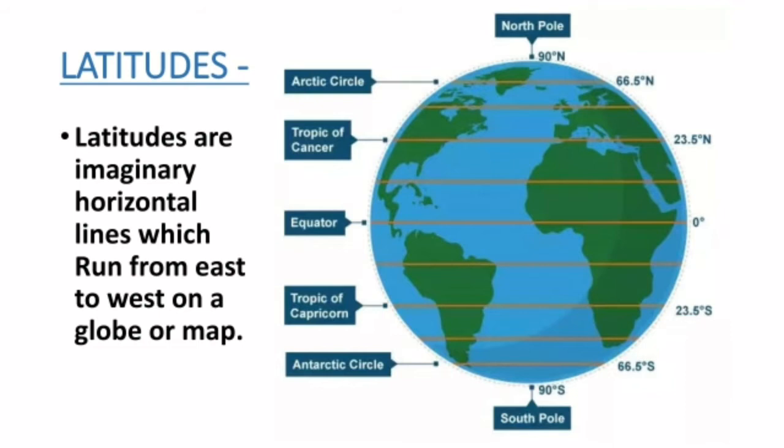Latitudes are parallel lines, and the main line in the middle is the equator at zero degrees latitude. This main line divides the Earth into two equal parts: the Northern Hemisphere and the Southern Hemisphere.